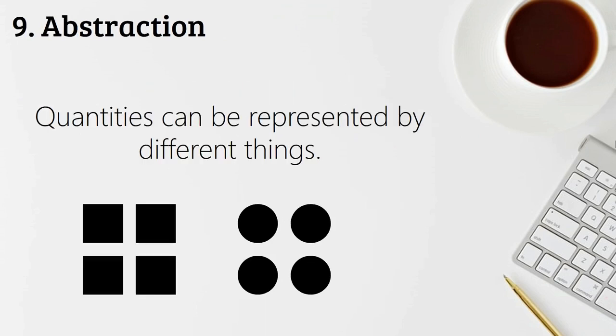So abstraction is the ninth counting principle. And it's that quantities can be represented by different things. So you have four squares, you have four circles, it's both four, even though they're different. This is a great one for that concept of if you had three elephants and three mice, for example, there's still only three in each set.